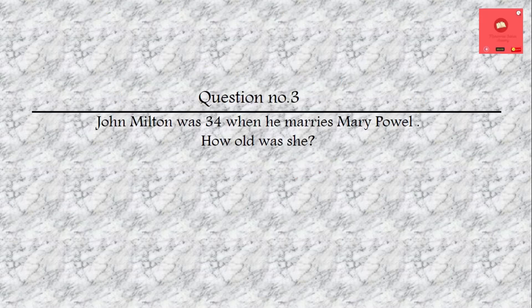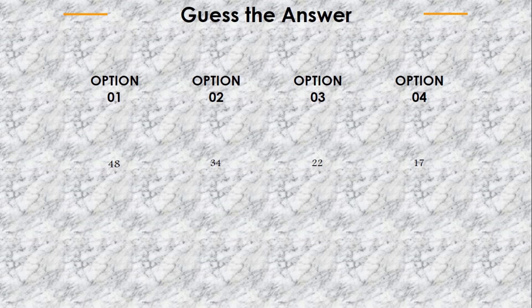Question number 3: John Milton was 34 when he married Mary Powell. How old was she? Options are: 48 years old, 34 years old, 22 years old, or 17 years old. The answer is 17 years old.